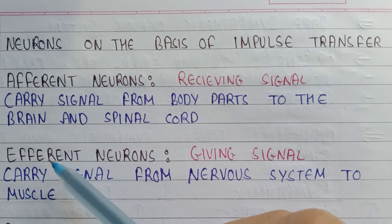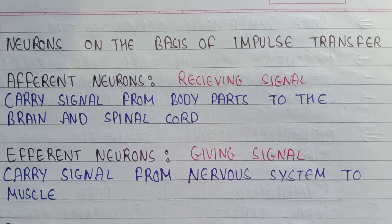That's why they are known as efferent neurons. So this is all about afferent neurons and efferent neurons. You can take a screenshot of this to remember both types.